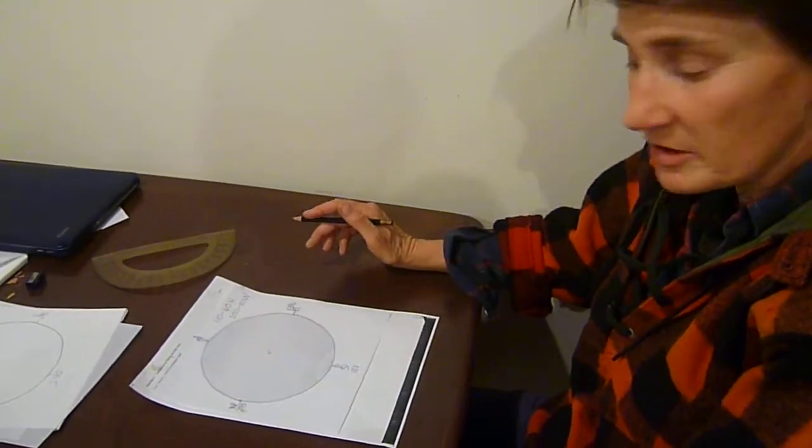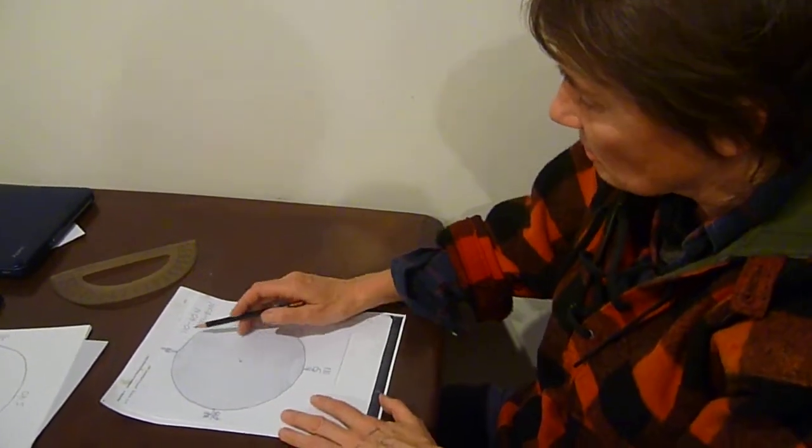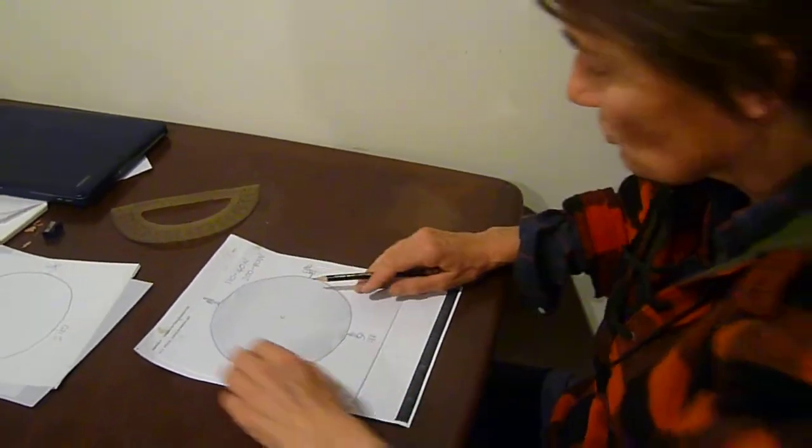So I'm going to show you now on the stereonet how we find the intersection line between two planes. I'll quickly plot up the planes for 110, 40 north, and 280 west.